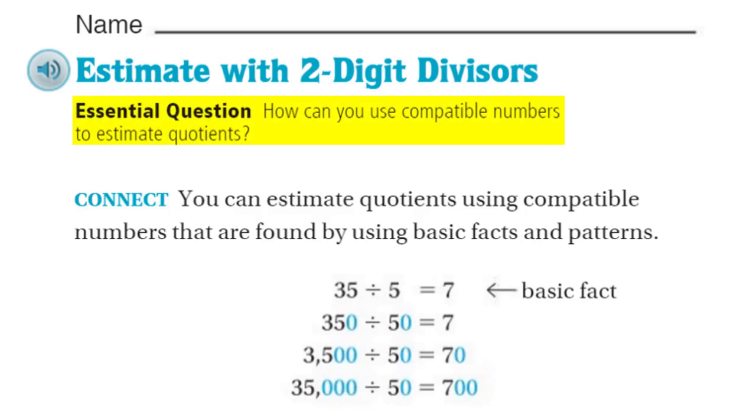Here, it's called the essential question. And it says, how can you use compatible numbers to estimate quotients? I love that. Compatible. Compatible things get along, right? Things will work out. And we'll talk about compatible numbers, because right here it says, connect.